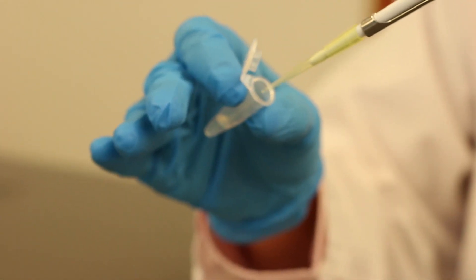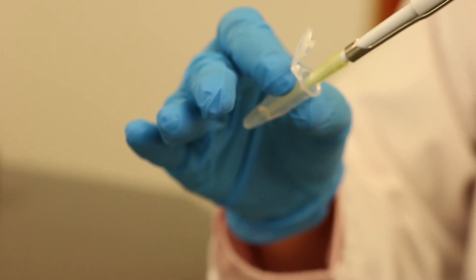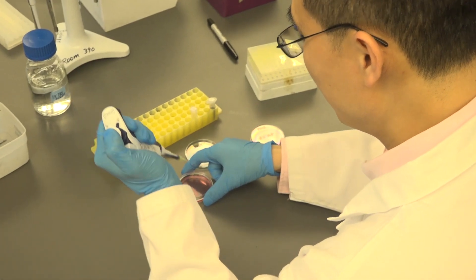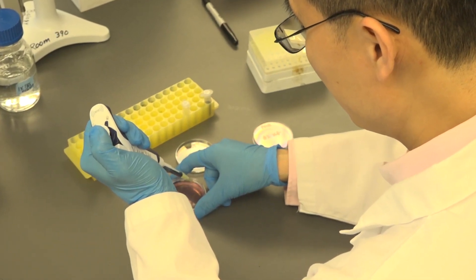After pipetting up the EGF solution, check to make sure there's a liquid in your tip, as you will pipette a very small volume. When adding solutions into the culture dish, pipette against the inner wall of the dish.